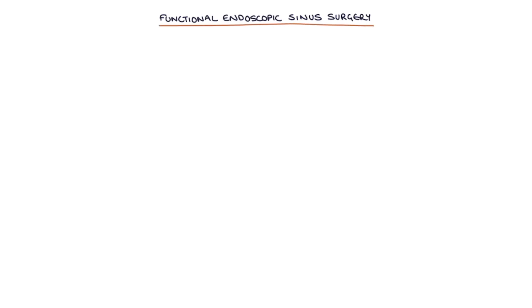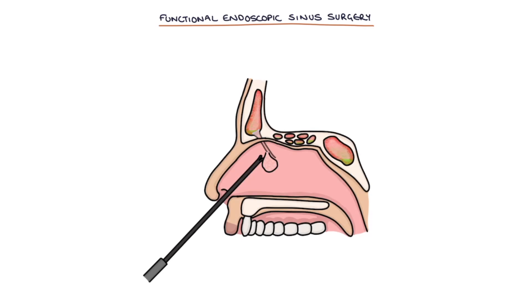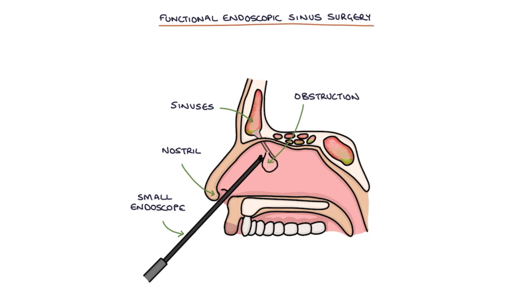Finally, let's talk about functional endoscopic sinus surgery. FESS involves using a small endoscope — a camera — inserted through the nostrils and into the sinuses. During the procedure, instruments can be used to remove or correct any obstructions to the sinuses. Obstruction may be caused by swollen mucosa, bone, polyps, or a deviated septum.